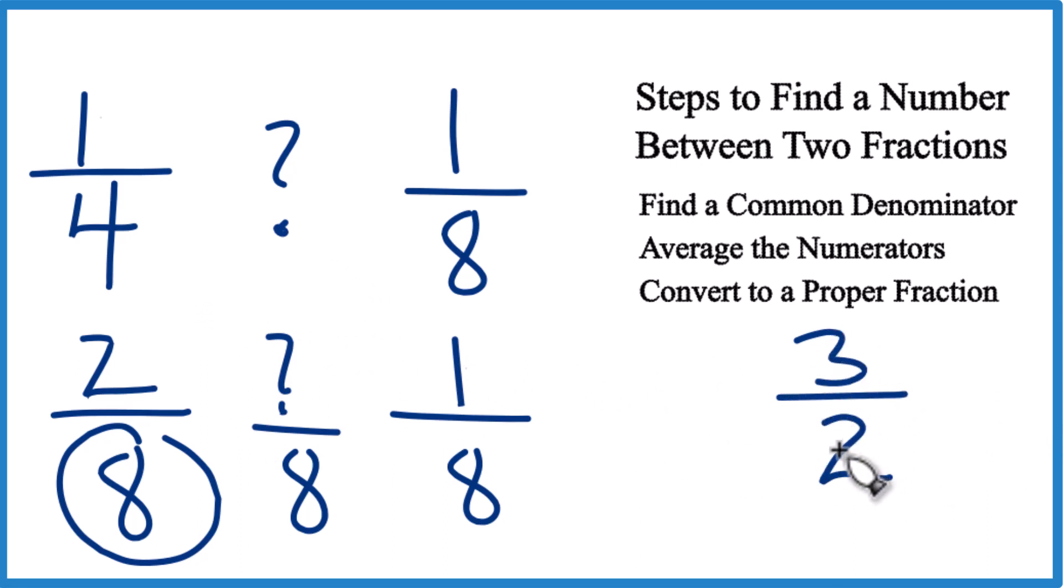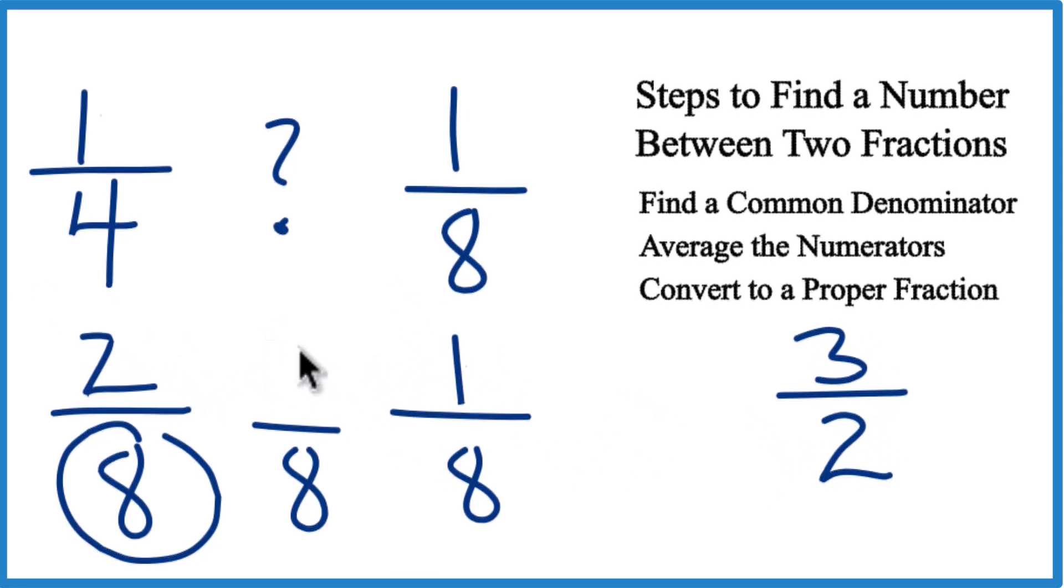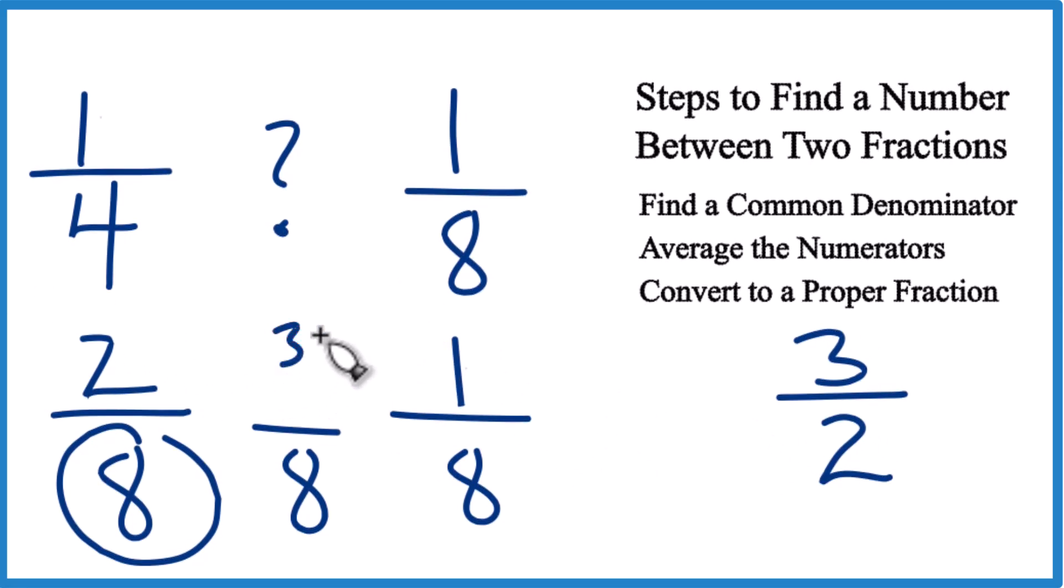And that makes sense. This is 1.5. 1.5 is between 2 and 1. So we have 3/2 over 8, and this is a complex fraction. It's a little bit messy, so let's convert this to a proper fraction.